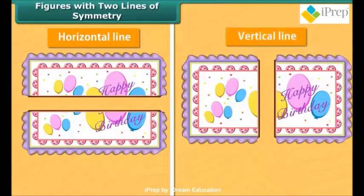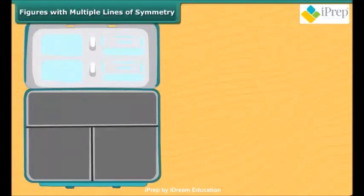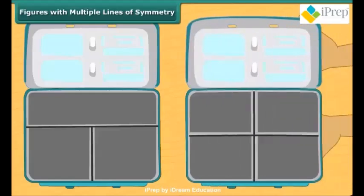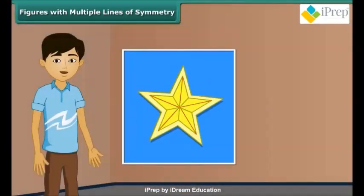So the cake has two lines of symmetry along which it can be divided to give two identical halves. Thus we can say that a rectangle has two lines of symmetry. Archie has two lunch boxes — one has three lines of symmetry, which she doesn't like, so she keeps it away and picks up another one. That box has four lines of symmetry.